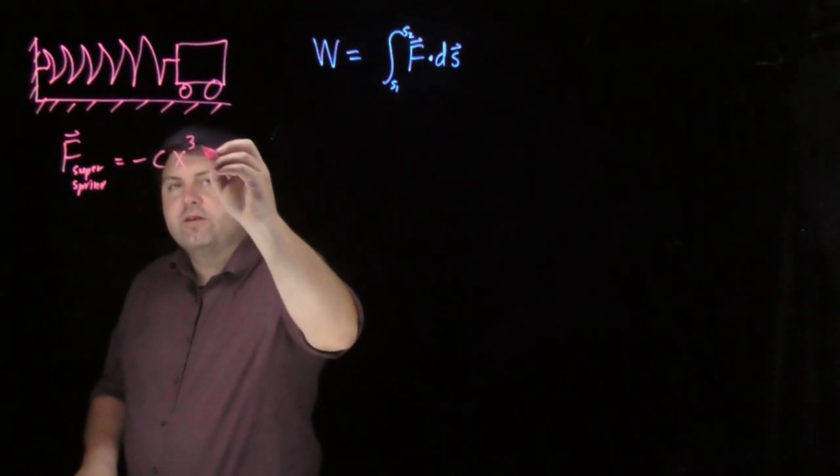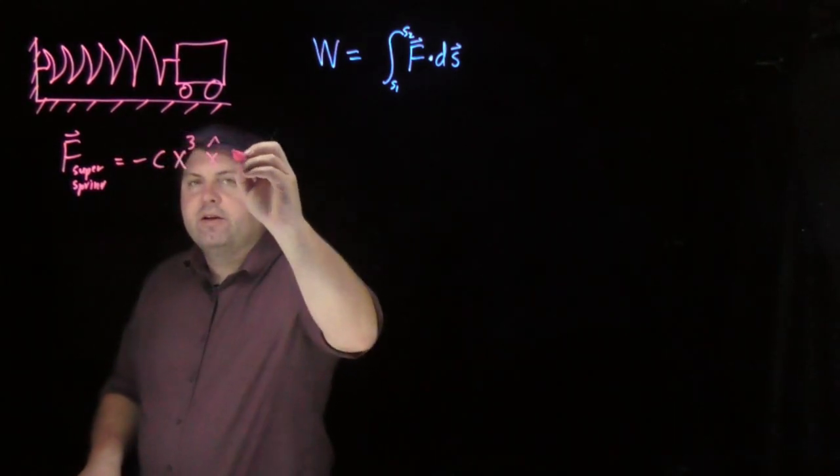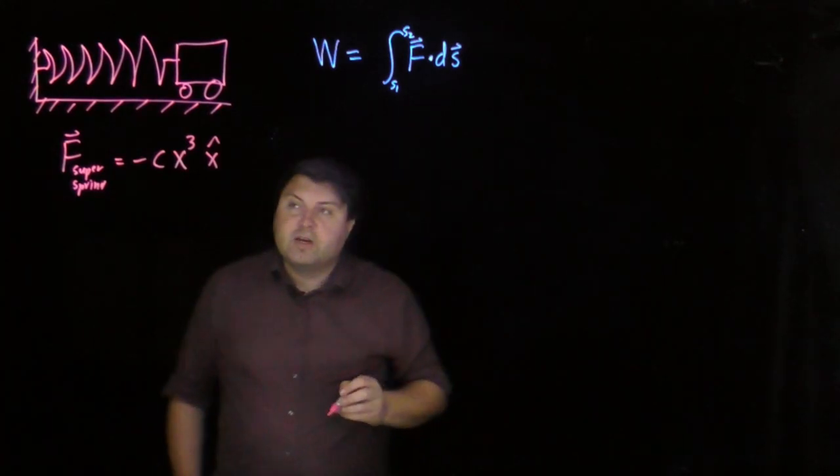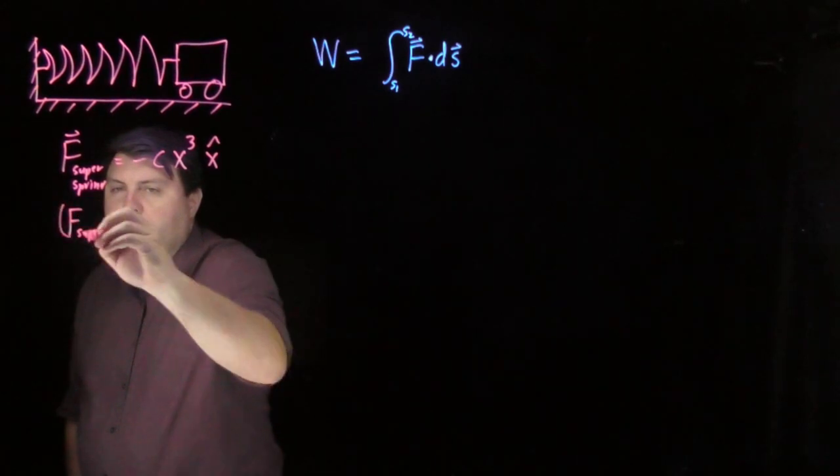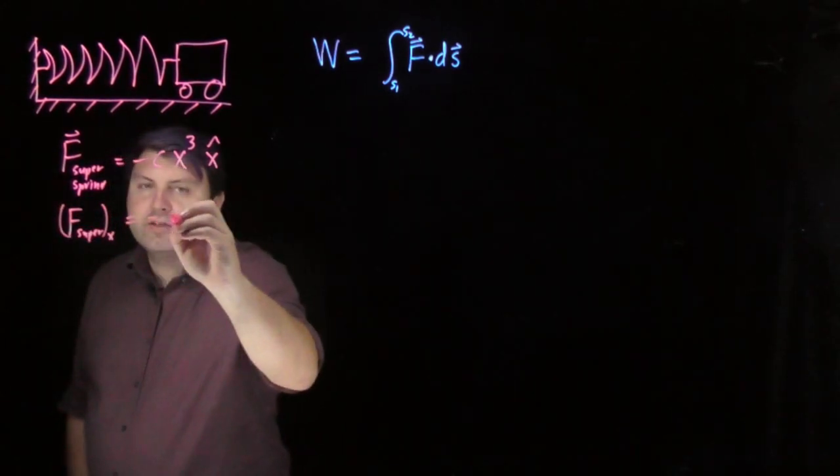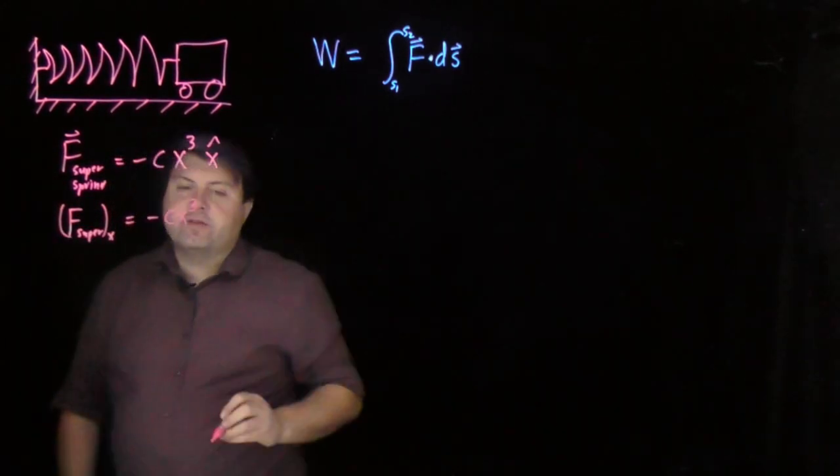we're going to have x to the third power in the x direction. What we can also then say is that the force for our super spring in the x direction is negative cx³.